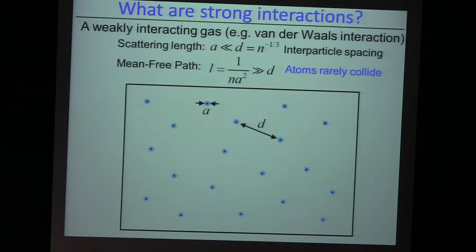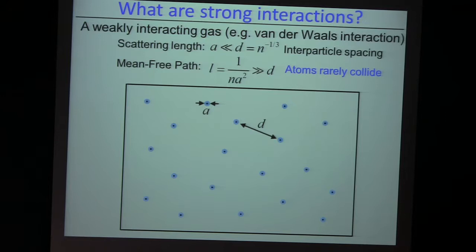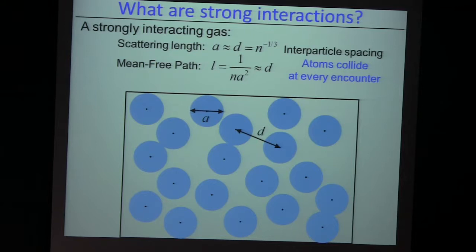What do I actually mean by strongly interacting? Well, there are two parameters you're interested in. There's the interparticle spacing D, or the density to the minus one-third. And there is the scattering length, which tells you essentially the size of these little atoms — or at least how much of the other atom a given atom sees. When the scattering length is much smaller than the interparticle spacing, this is a weakly interacting gas. They rarely collide and we have a very long mean-free path.